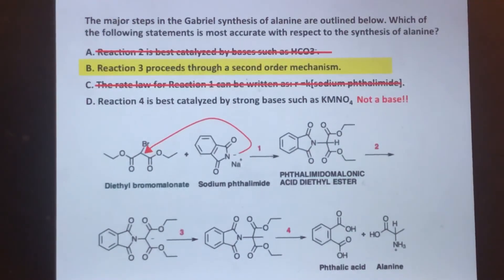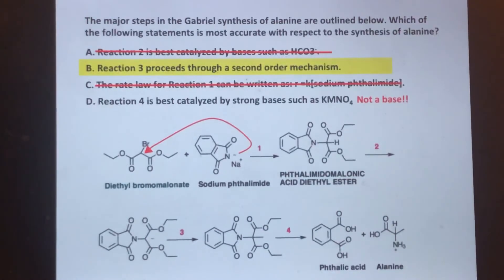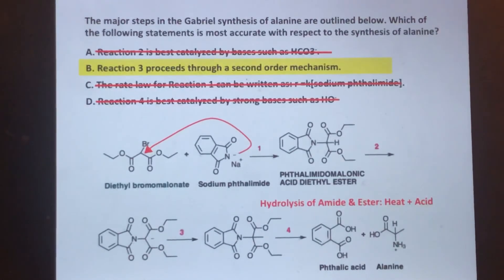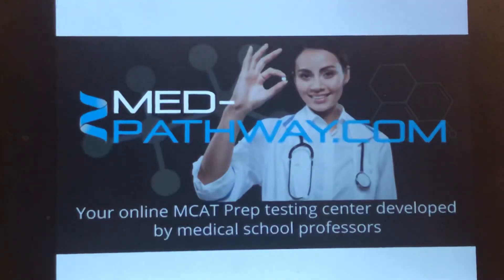Choice D references a strong base such as permanganate — but permanganate is not a base; it's a strong oxidizing agent. You could eliminate that right away. Reaction four is hydrolyzing an amide and ester, done with heat plus acid — or base — but not permanganate. Regardless, choice B is the correct answer. Check us out at medpathway.com.